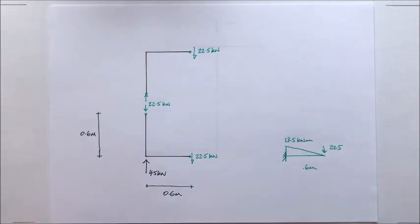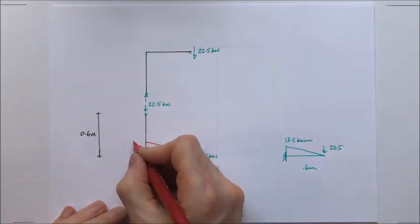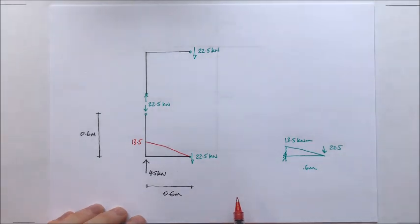And then I'll draw that on. I'll draw it on here actually, to keep it nice and clear. So we've got a bending moment here of 13.5 kilonewton meters.